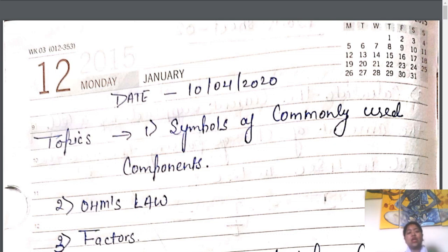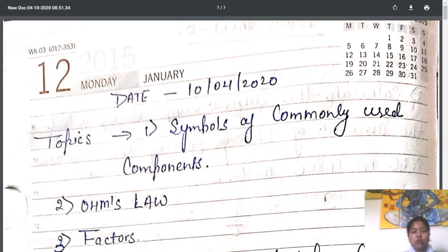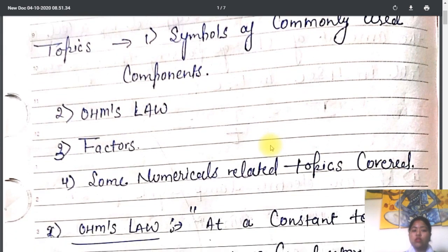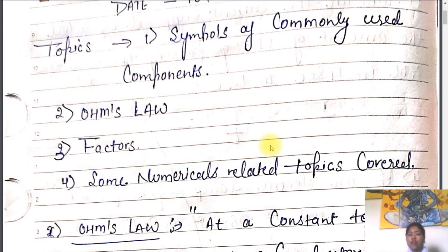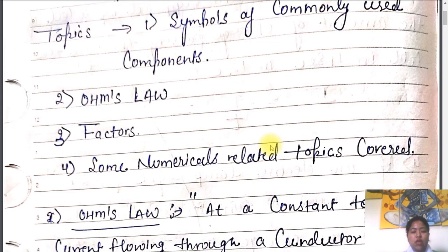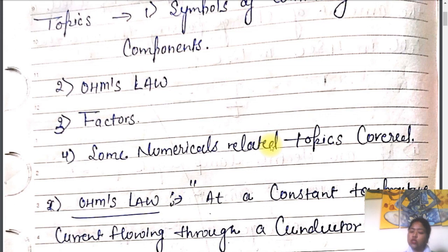So these are our previous topics. Now today we are going to discuss new topics. Very first we are having symbols of the commonly used components. Secondly we are having Ohm's law. Third we are having some factors that affect the resistance of the circuit, and next we are having some numericals related to the topic.